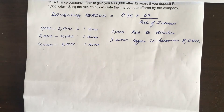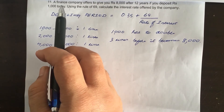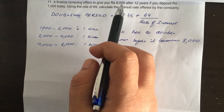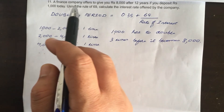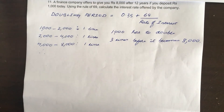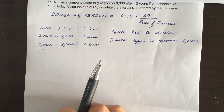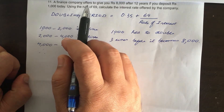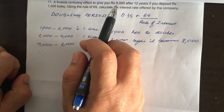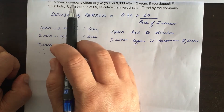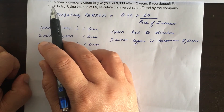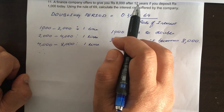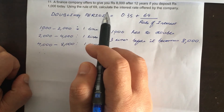In this problem, a finance company offers to give you 8,000 rupees after 12 years if you deposit 1,000 rupees today. Using the rule of 69, calculate the interest rate offered by the company. We know the future value is 8,000 rupees, the present value is 1,000 rupees, and the period n is 12 years. We have to find the interest rate k.